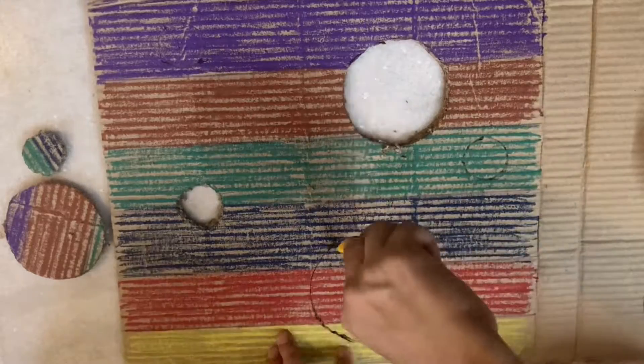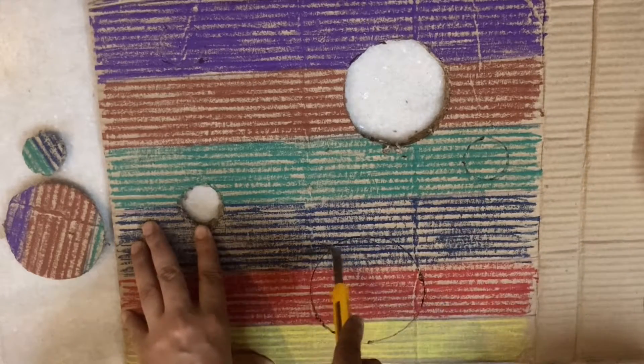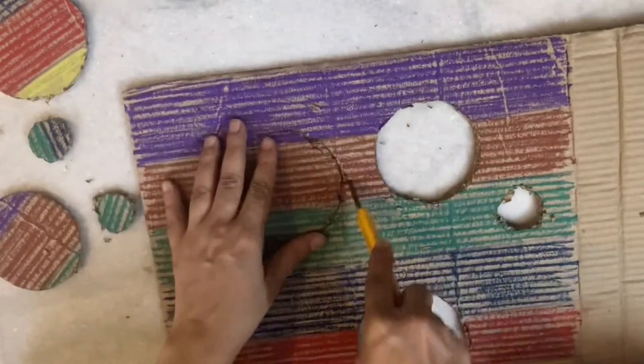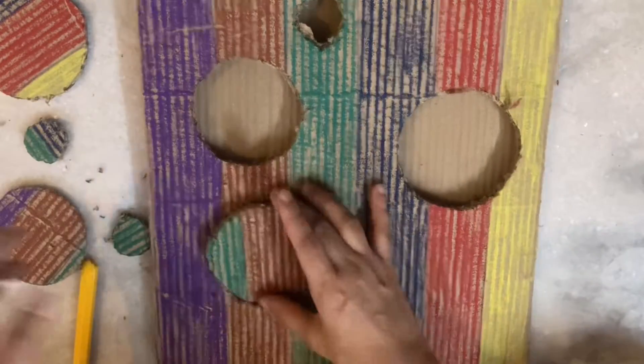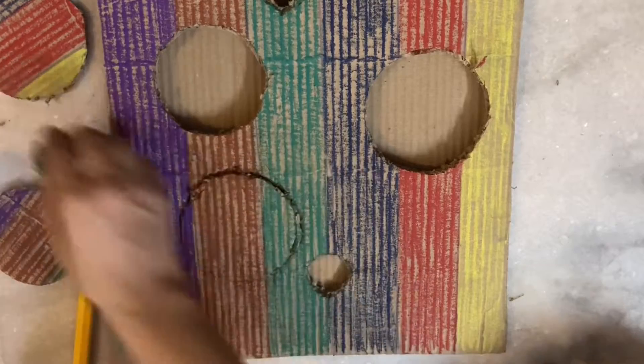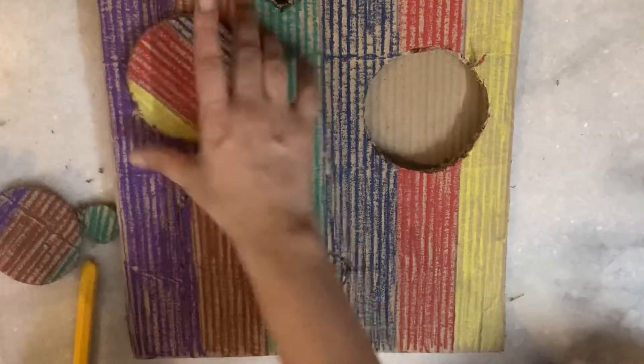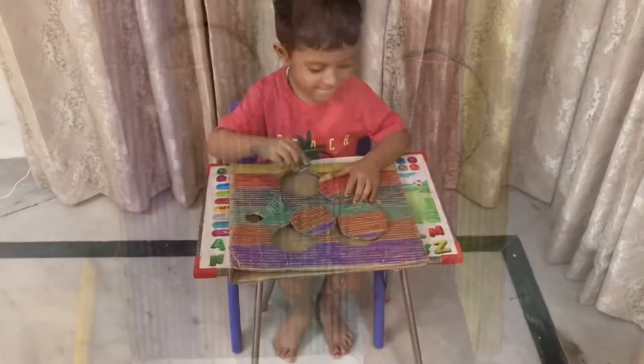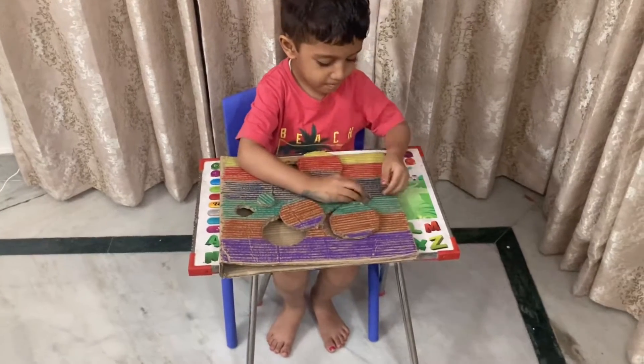These circles will have two colors, three colors, or a single color depending on the size of the circle. Now you can give the circle cutouts to your kid and the kid will match them according to the pattern.